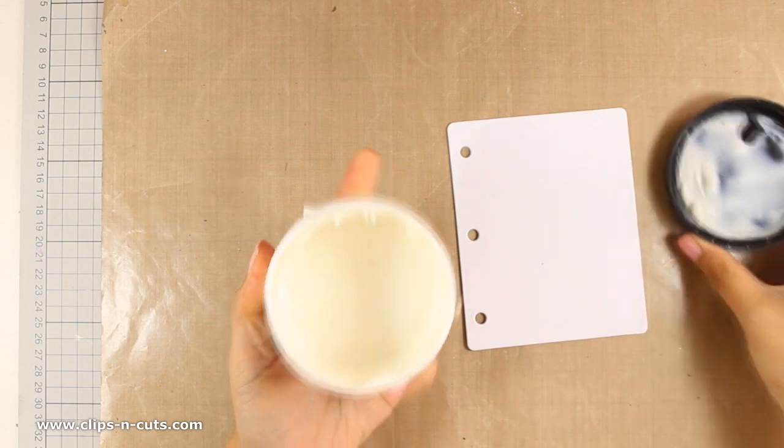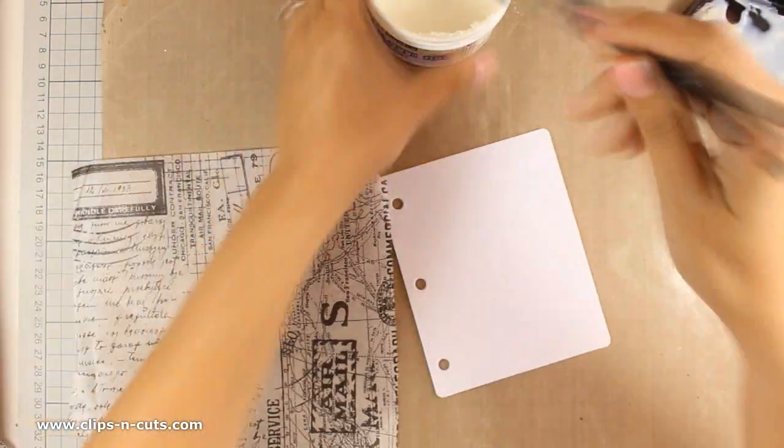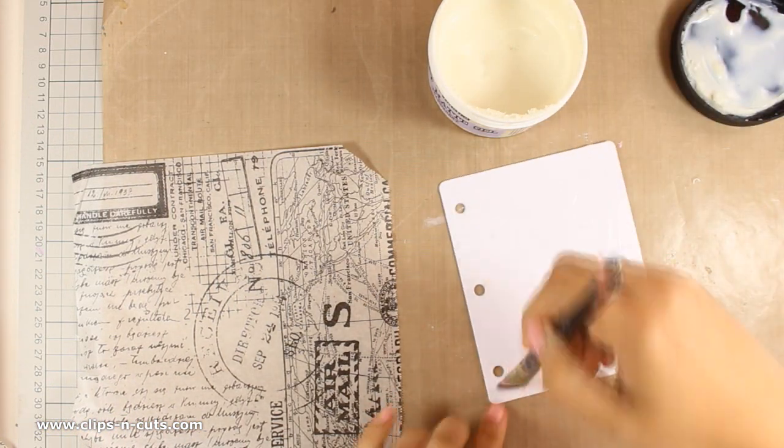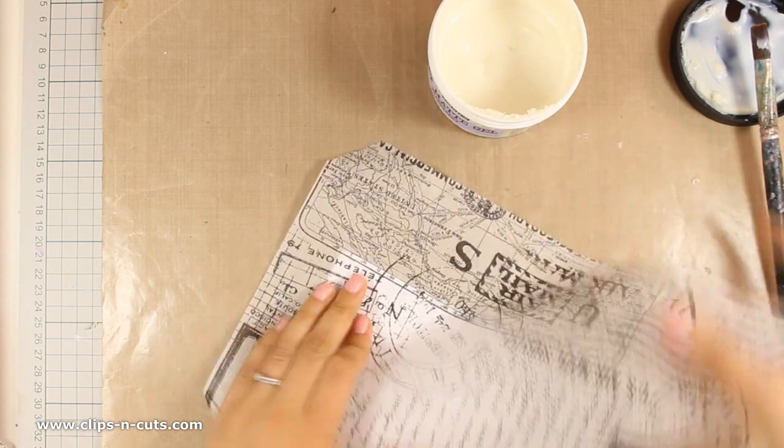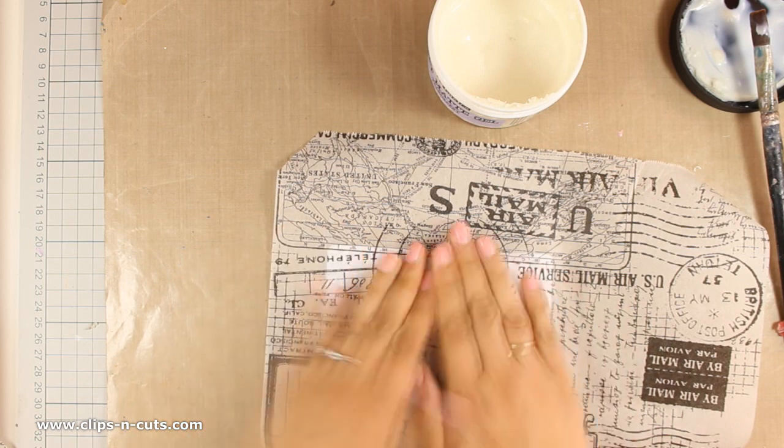First of all, I am going to use my gel medium, this is by Prima, and a piece of tissue paper by Ranger. I am going to apply some gel medium and stick one on top of the other. This is an easy and quick way to create an interesting background.